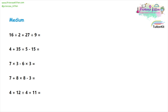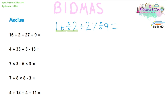Moving on to some slightly harder examples. You can see there are four numbers and a range of different steps involved, but we still have to follow BIDMAS as we are working our way through these questions. You just have to identify which bit to start with first. With our first sum, it is the two sets of divisions that need to be done first. So 16 divided by two gives us eight, and 27 divided by nine gives us three. Then our sum simplifies to eight plus three, which gives us 11.